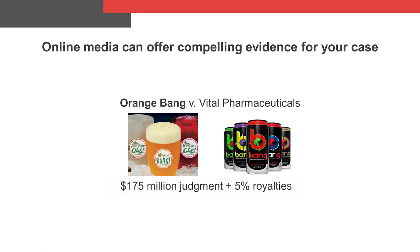Vital's Bang brand was also involved in IP litigation, this time brought on by a different beverage manufacturer, Orange Bang. The plaintiff in this case also relied on social media evidence to demonstrate that consumers were likely to be confused by Bang's alleged trademark infringement. The case was a success for the plaintiff and ultimately resulted in Orange Bang receiving a $175 million judgment and the rights to claim 5% of royalties on future Bang sales.